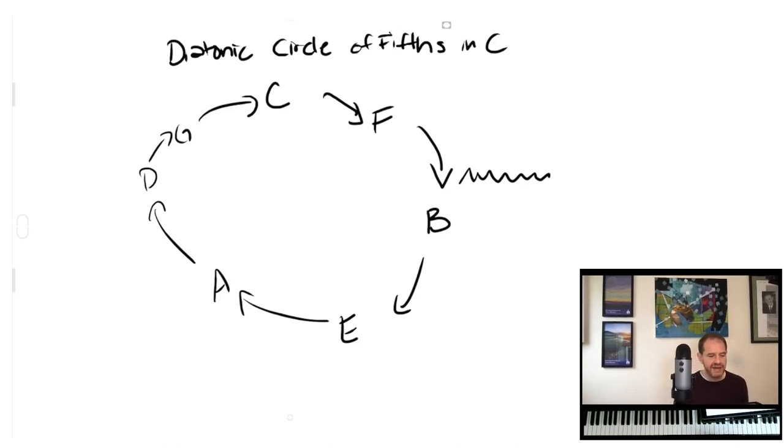It's going to start out working just like the regular circle of fifths. We're going to go from C to F, but we can't go from F to B flat, right? B flat is outside of the key signature of C. So instead, we're going to fudge it. And this is really the key move in the diatonic circle of fifths right here, is going instead of from F to B flat, we're going to do a diminished fifth, and we're going to go from F to B. So it's the circle of fifths still, just some of them are diminished.